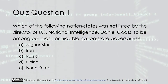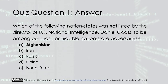Quiz question one: Which of the following nation states was not listed by the Director of U.S. National Intelligence, Daniel Coats, to be among our most formidable nation-state adversaries? A. Afghanistan. B. Iran. C. Russia. D. China. E. North Korea. The answer is A. Afghanistan.